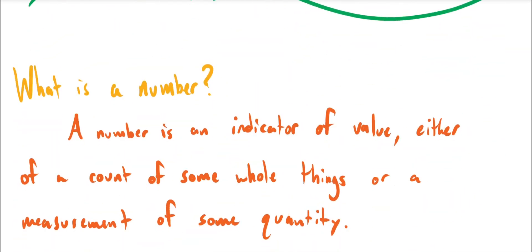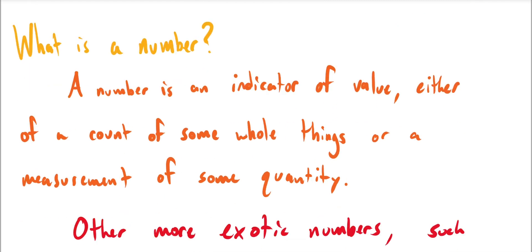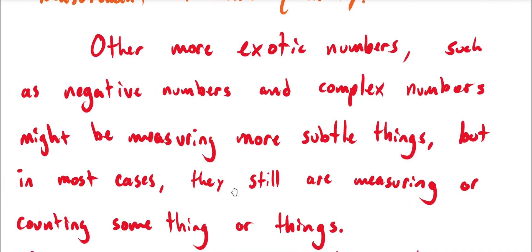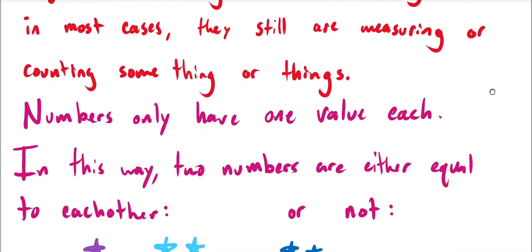So first of all, what is a number? A number is an indicator of some value, either a count of some whole number of things or a measurement of some quantity. Now, we will deal with a lot of different kinds of numbers in this class. There are more exotic kinds of numbers, such as negatives and complex numbers, and we'll be seeing all of those. And they are measuring perhaps more subtle things, but in most cases, they're still measuring or counting something. And in any case, they're all going to obey a certain set of fundamental rules, which we're going to go over now.